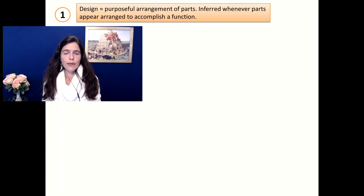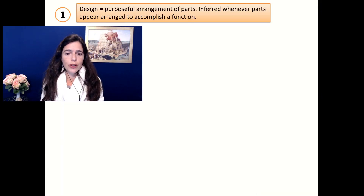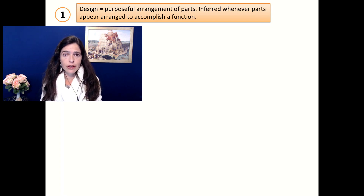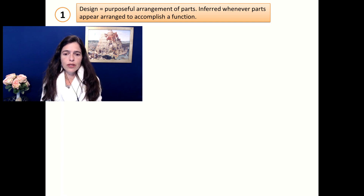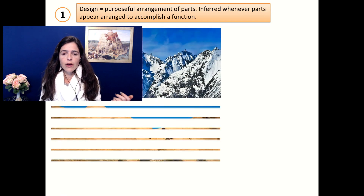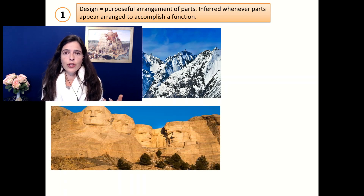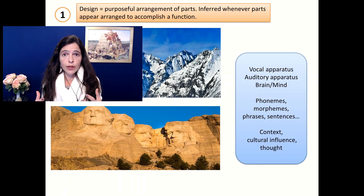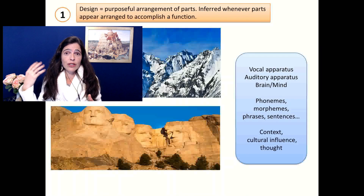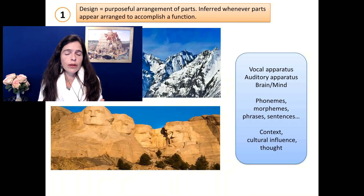We had five arguments before. The first one was that design is a purposeful arrangement of parts and that we infer it from everything we see in nature. Well, in language, when you look at the vocal apparatus alone, or the auditory apparatus, or the idea of how our brain uses language and how it connects to mind — which is not even tangible — the complexity is insane.